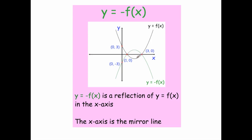The points below the x-axis reflect above it. Interestingly, the points that are on the x-axis are on the mirror line, so they won't move. So (1, 0) and (3, 0) will stay where they are. The green curve represents y equals minus f of x — a reflection in the x-axis, flipping it vertically.